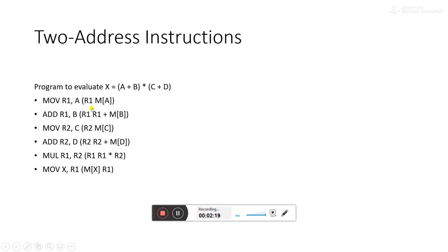In the two address instruction example: first, a is moved into R1, then whatever is in R1 is added with b. Similarly, c is moved into R2, then R2 is added with d. Then R1 and R2 are multiplied and the result is stored in R1. Finally, R1 is transferred to memory location x.